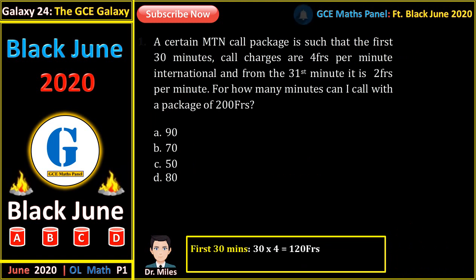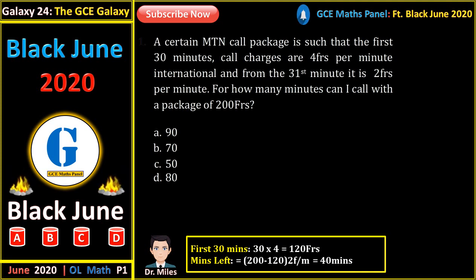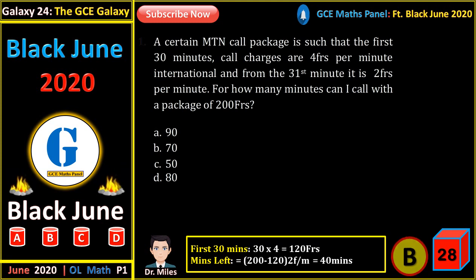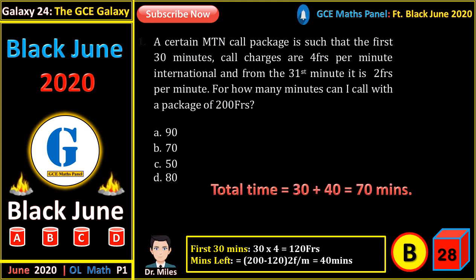A certain MTN call package is such that the first 30 minutes are charged at 4 francs per minute, and from the 31st minute it is 2 francs per minute. For how many minutes can I call with a package of 200 francs? The first 30 minutes cost 120 francs. The remaining 80 francs at 2 francs per minute gives 40 more minutes. So I can call for a total of 70 minutes.